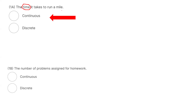The second one: the number of problems assigned for the homework. The keyword here is 'the number of.' As long as you see 'the number of,' it means that you can easily count it and it is a discrete random variable.